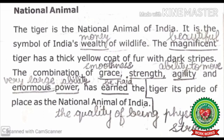The magnificent tiger has a thick yellow coat of fur with dark stripes — magnificent means beautiful. The combination of grace, strength, agility, and enormous power has earned the tiger its pride of place as the national animal of India. Grace means smoothness, strength means the quality of being physically strong, agility means ability to move, enormous means very large, power means ability, and earned means to be paid.